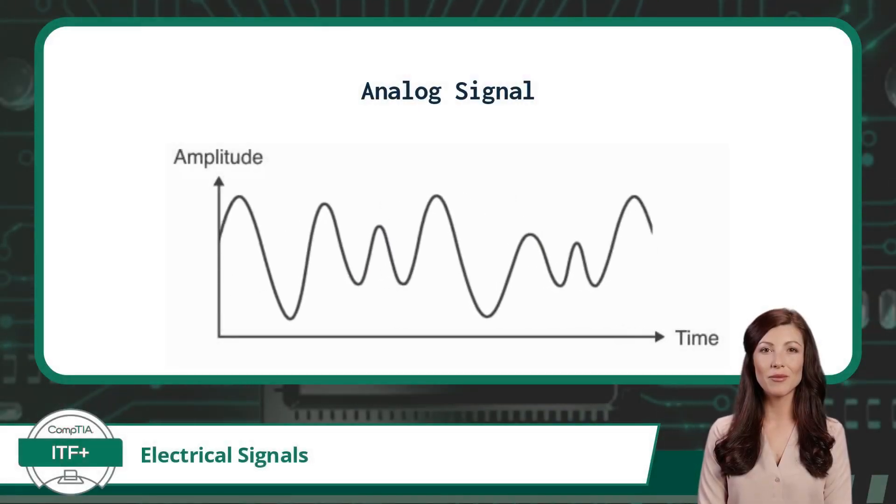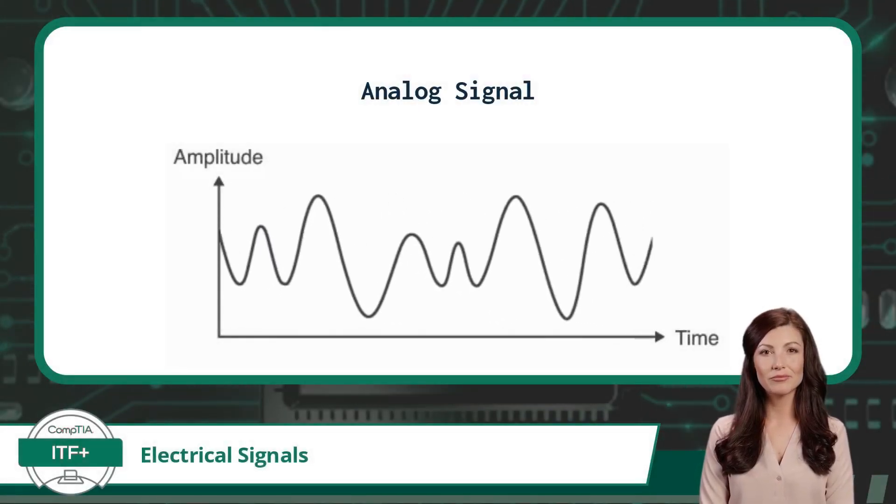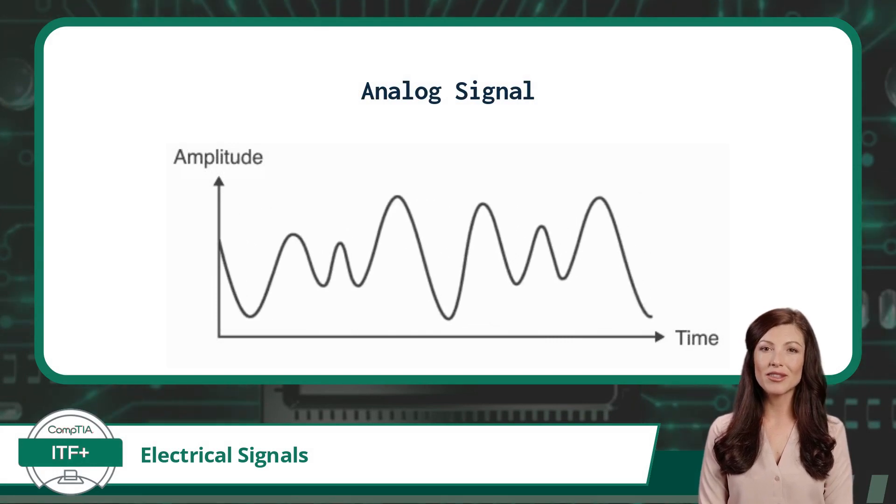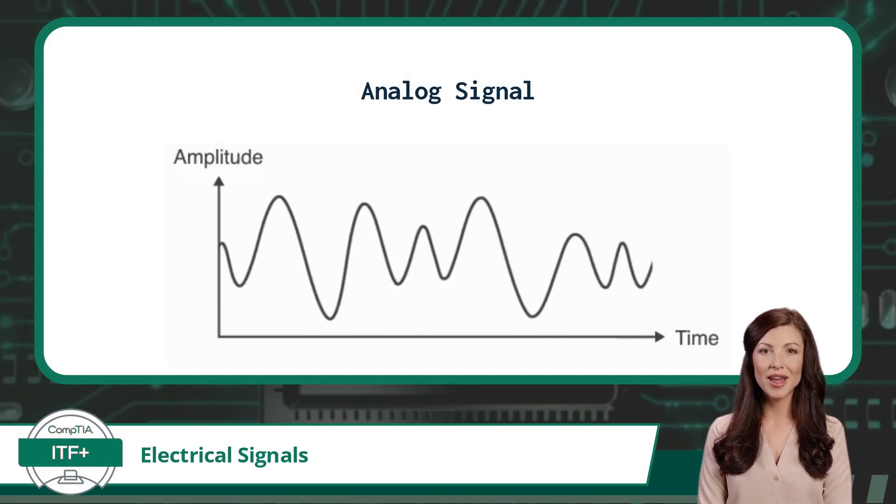Here is a visual example of an analog signal. Notice how the signal produces smooth and continuous upward and downward curves.